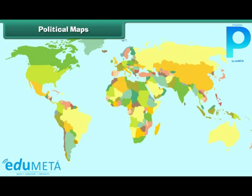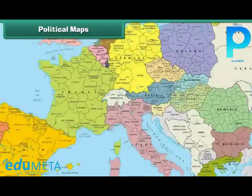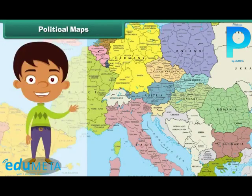A political map is a map that shows lines defining countries, states and territories. Its purpose is to show the political borders. For example, the world political map shows all the countries of the world with their capitals. Similarly, the political map depicts all the political boundaries and also the names and capitals of all the countries in Europe. Thus, political maps help us in understanding the world better.